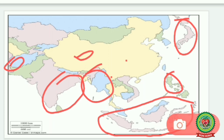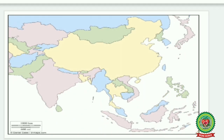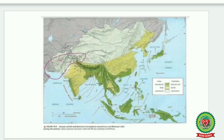The low rainfall is received by Central Asia, Western Asia, and Siberian Asia. These parts receive less rainfall. You can understand this by seeing the map as well.